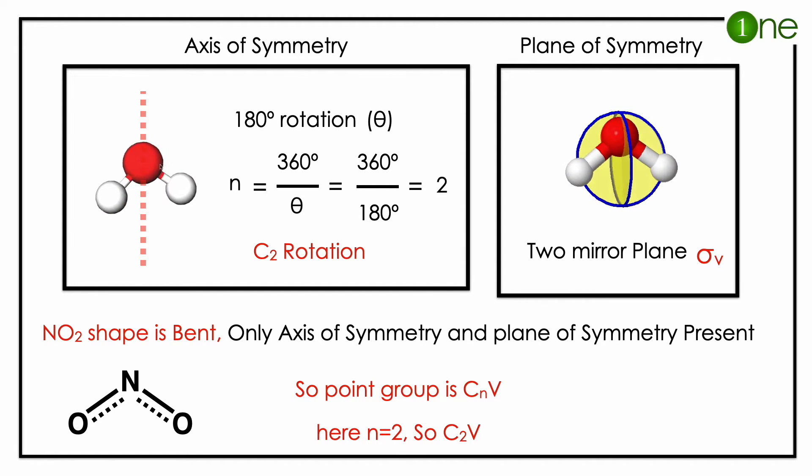bisects the atoms equally—you have sigma V. So you have C2 axis with sigma V, so the point group is C2V. NO2 molecule is a bent molecule; the point group is C2V.